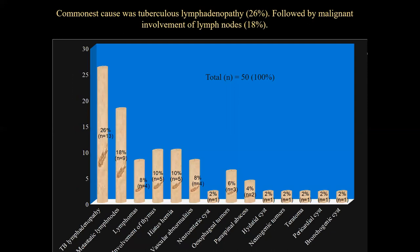Out of 50 patients, the most common cause was TB lymphadenopathy, with 26 cases, followed by metastatic lymph nodes, then lymphomas, thymic involvement, hiatal hernia, vascular lesions, neuroenteric cysts, esophageal tumors, paraspinal abscess, hydatid cysts, neurogenic tumor, teratoma, pericardial cysts, and bronchogenic cysts.